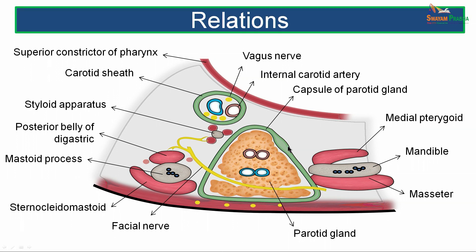This picture shows a cross section through the parotid region. The superficial or lateral surface, the anteromedial surface and the posteromedial surface are visible. The three borders are the anterior border separating the superficial from the anteromedial surface, the medial border separating the anteromedial from the posteromedial surface, and the posterior border separating the superficial surface from the posteromedial surface. The relations of the superficial surface include skin, superficial fascia and the parotidomasseteric fascia along with two groups of parotid lymph nodes.